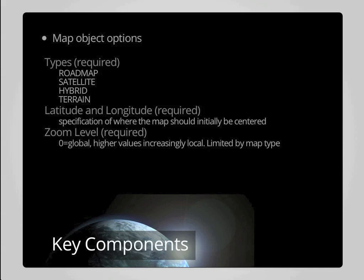Google Maps uses a set of fixed zoom levels starting at zero and typically moving to a maximum value of 18, though the available zoom level for a particular map type is limited. There is a way to inquire about the available zoom level for a particular map type over a given area, because available zoom levels vary from region to region. You are required to define the zoom level as part of creating the map object.